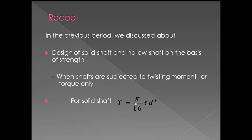Just to recap: for the solid shaft, torque equals pi by 16 into tau into d cubed. This is when the shaft is subjected to twisting moment or torque only. From this equation, you can find the diameter of the shaft when you know the torque and shear stress.